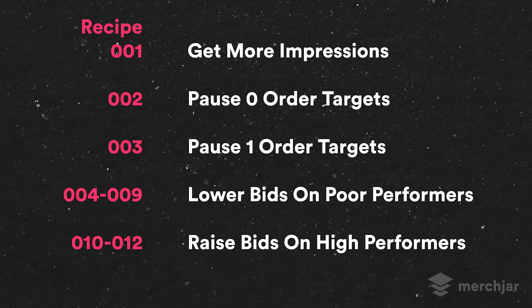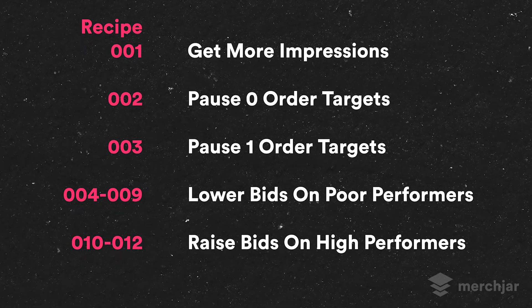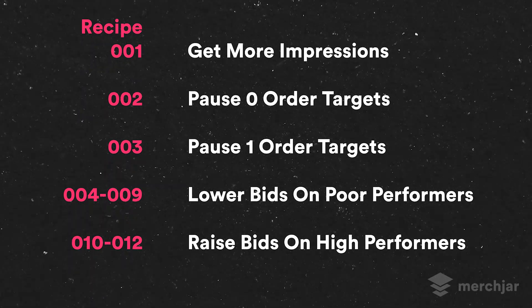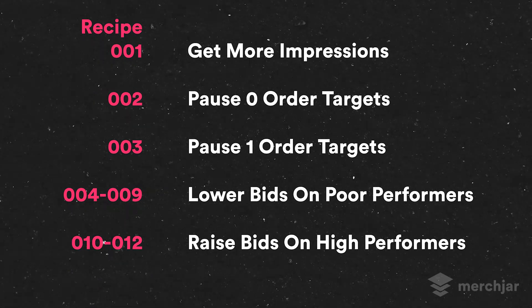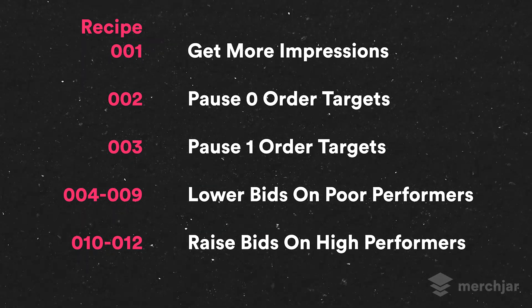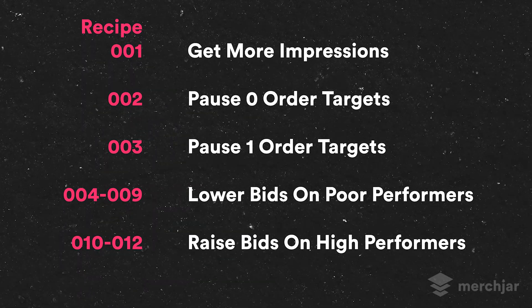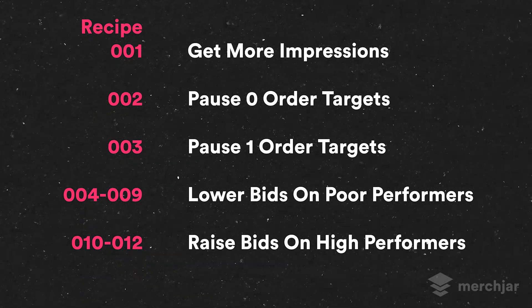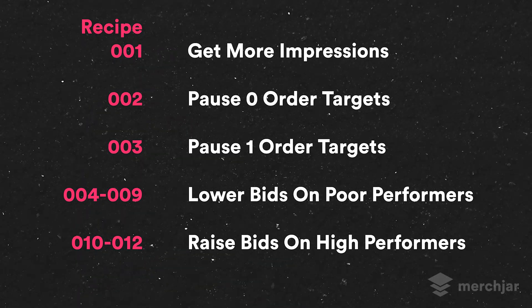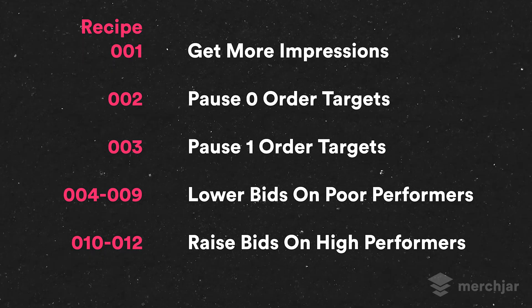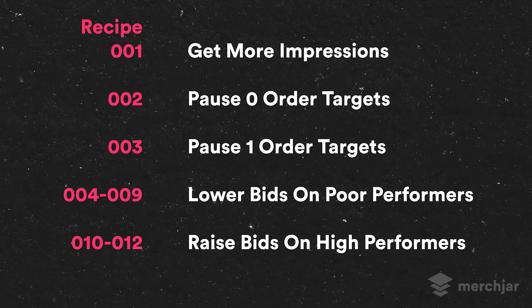These 12 getting started recipes automate four of those five optimizations. They're also set by default to run each day, giving you an advantage of making smaller, more frequent changes, which we find that campaigns respond better to. Recipe number one is for getting more impressions. Recipes two and three pause keywords and targets that have only zero or one order but are still getting lots of clicks. Recipes four through nine lower bids on high ACOS keywords and targets, and recipes ten through twelve increase bids on low ACOS keywords and targets.